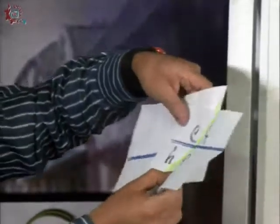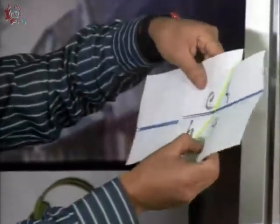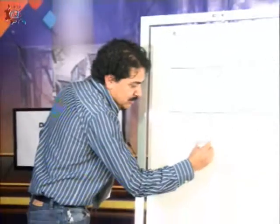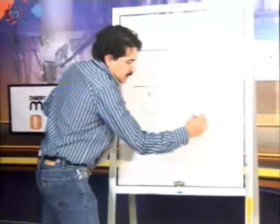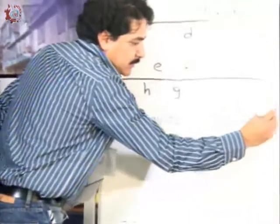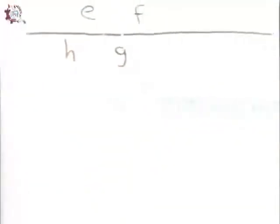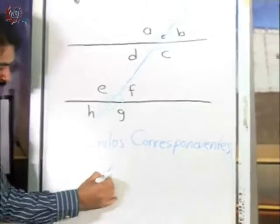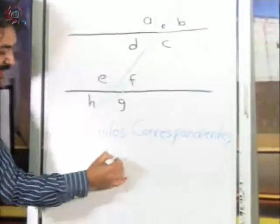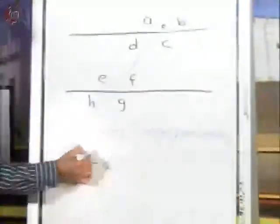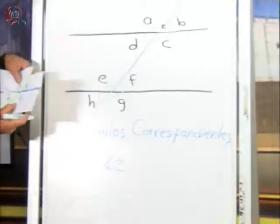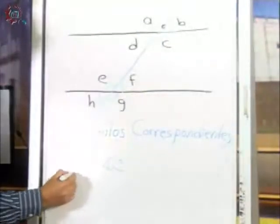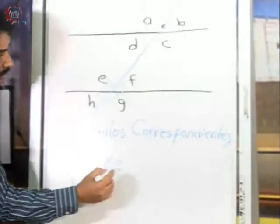A esos ángulos les llamamos ángulos correspondientes. En este caso, el A corresponde al E. Ángulo A es correspondiente con el E. Los siguientes ángulos correspondientes es B y F. Ángulo B igual al ángulo F.